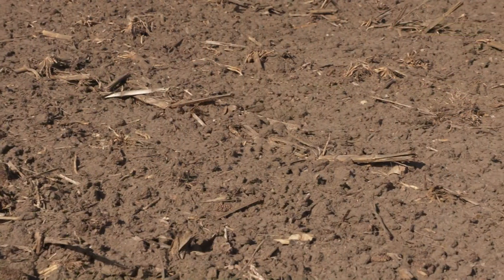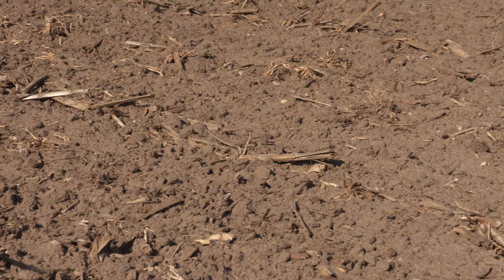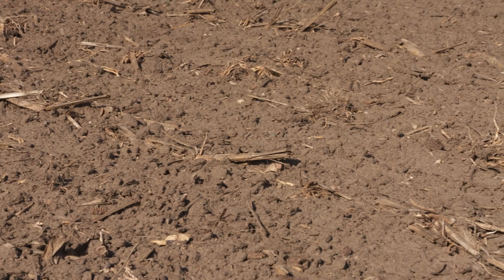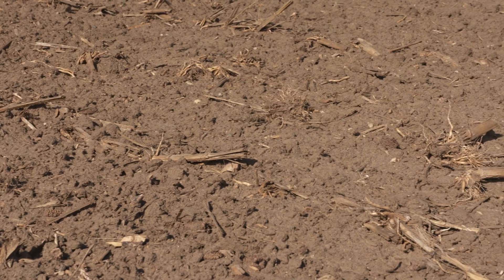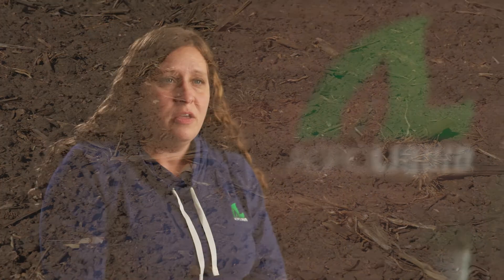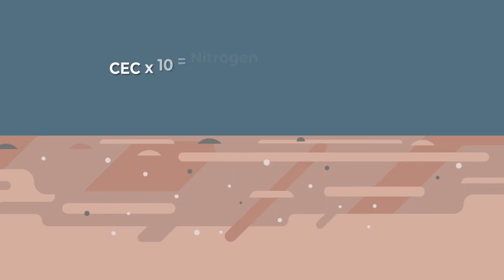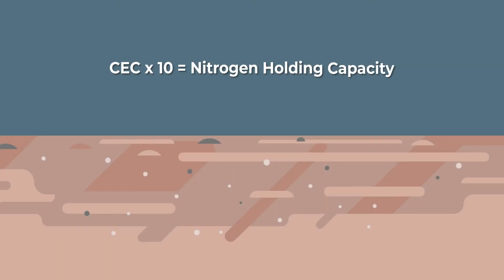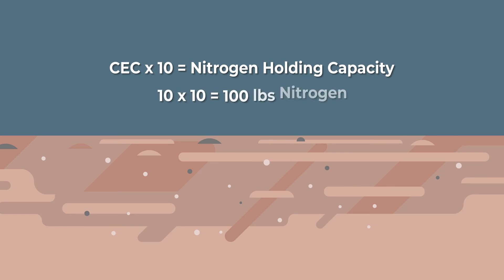Because sandier soils have less holding capacity, nitrogen can leach through that profile. An easy way to calculate how much nitrogen your soil can hold is to look at the CEC on your soil test and multiply that by 10 to figure out how many pounds of nitrogen can be applied in a single application.